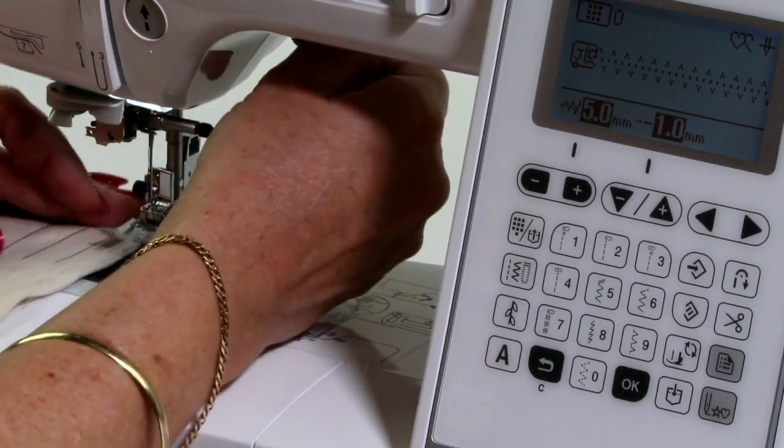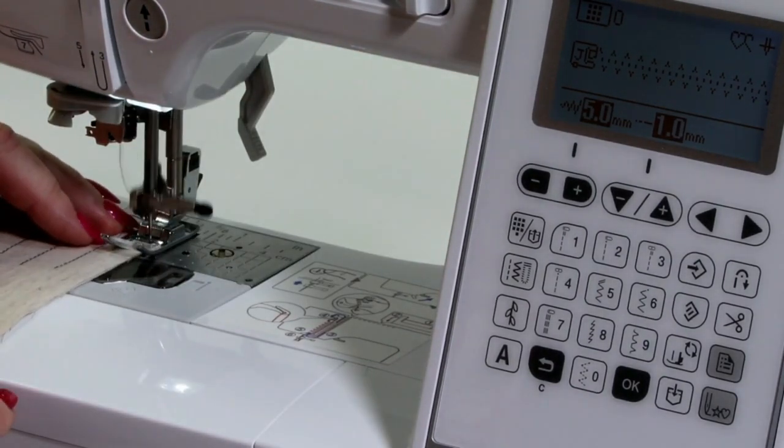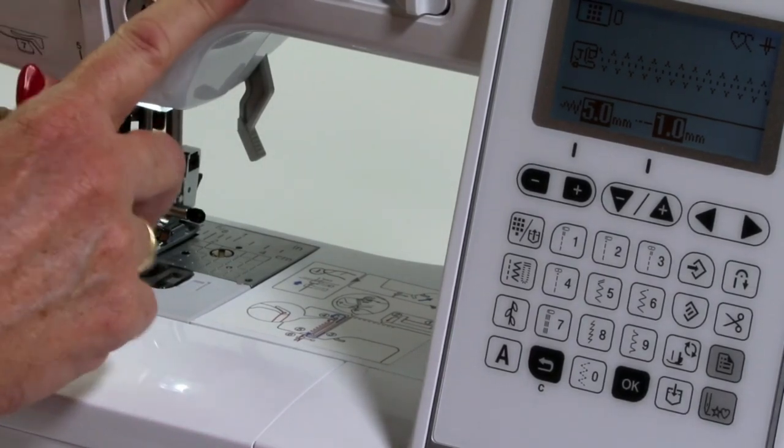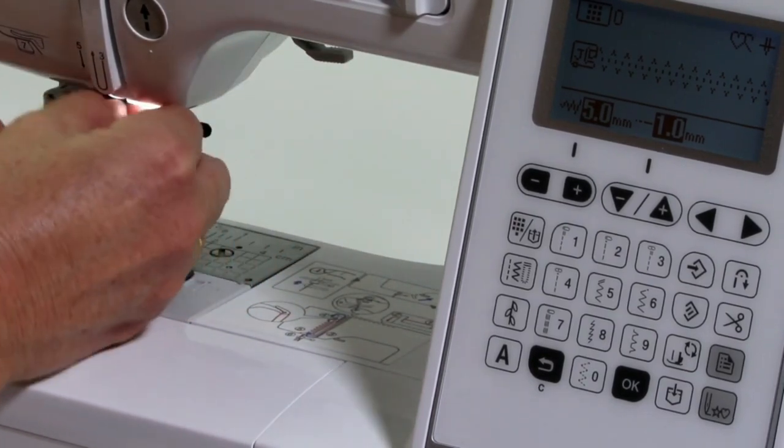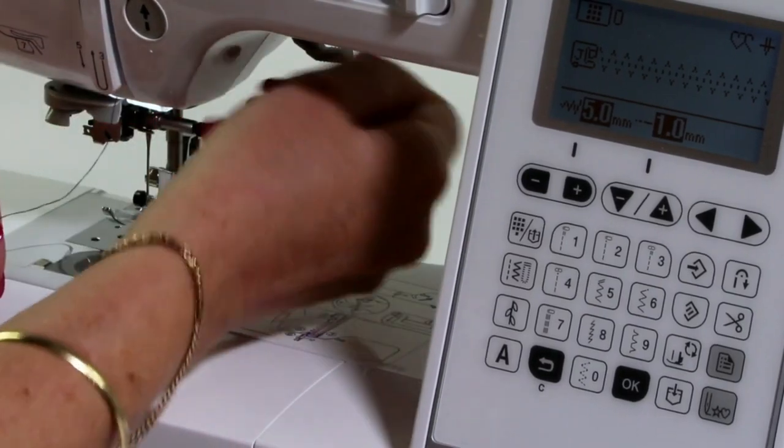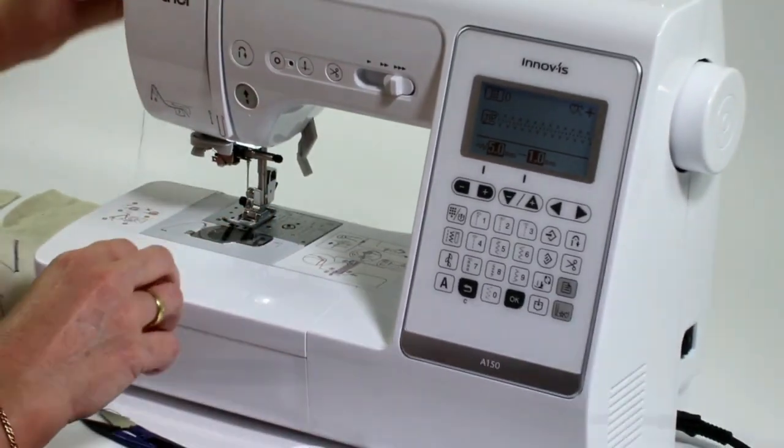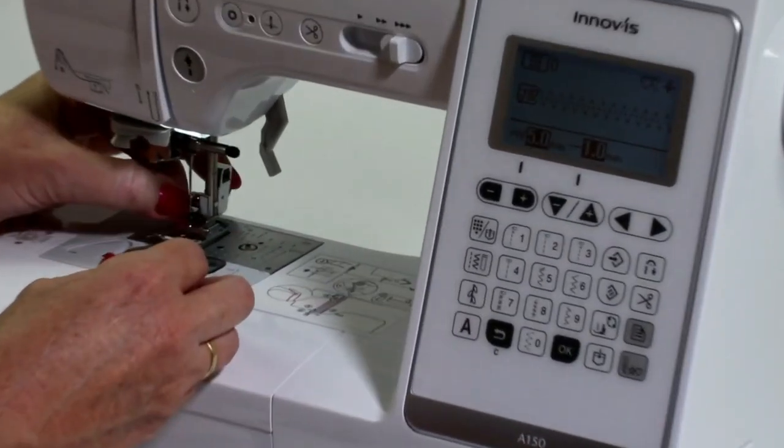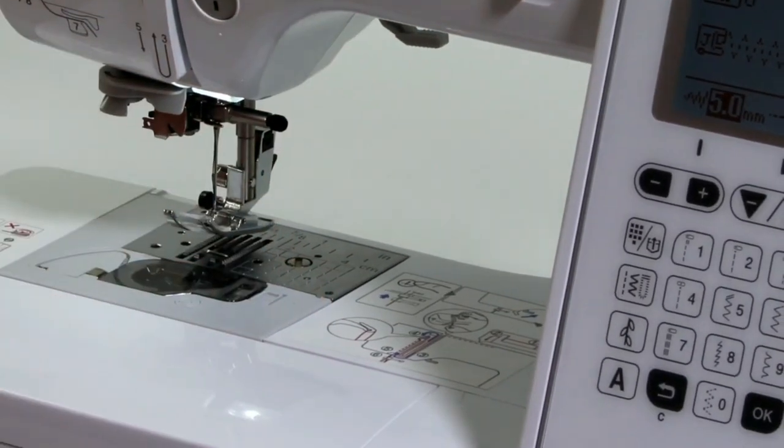I'm going to do that again. So I'm just going to sew with it on that edge and then the threads come out of the needle. Re-thread the machine. Cut the thread. Use my needle threader. Bring that through.